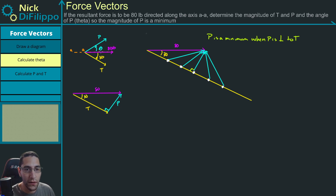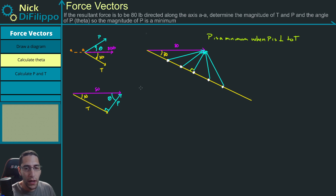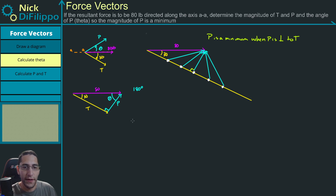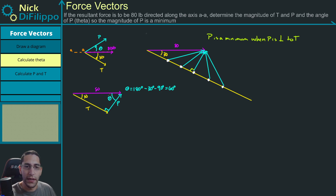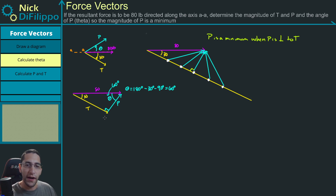How do I figure out what theta is? Theta is this angle over here, which is also this angle right here. I know that all interior angles of a triangle add up to 180 degrees. So if I subtract 30 degrees and subtract 90 degrees, theta will be equal to 60 degrees. So this angle is 60 degrees — it's a 30-60-90 triangle.